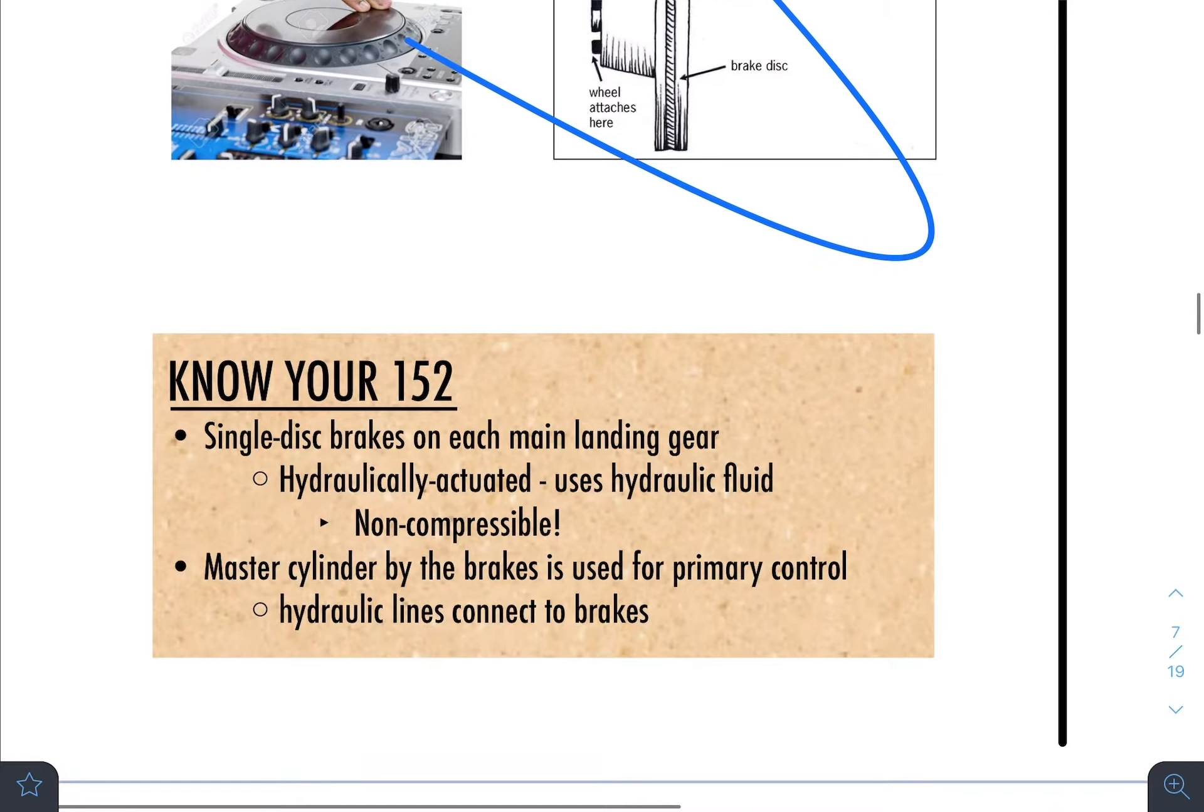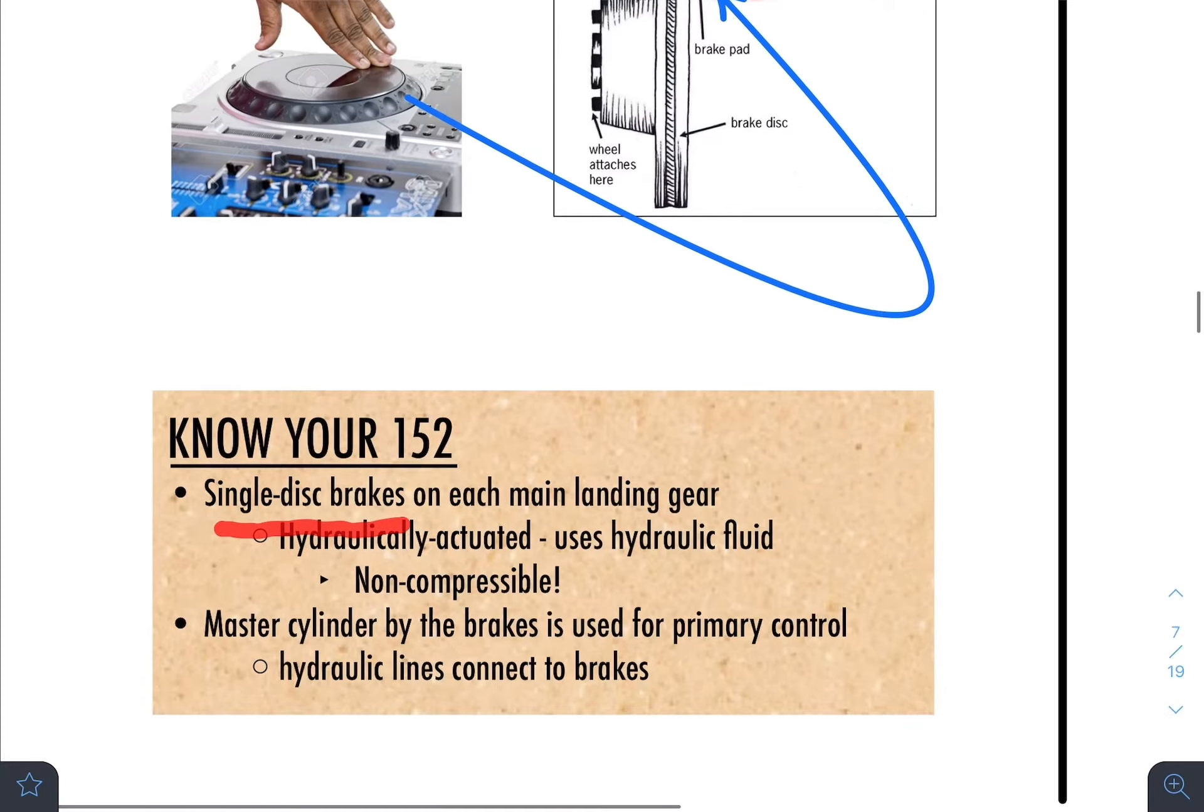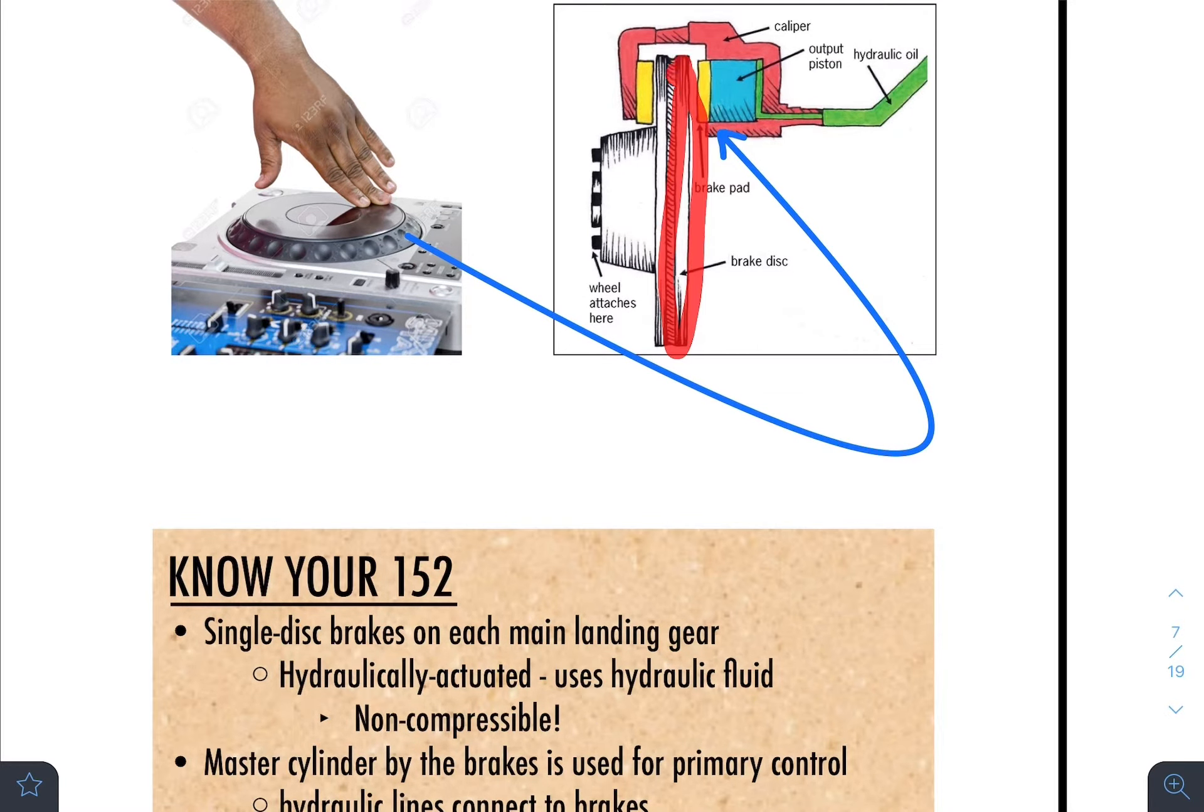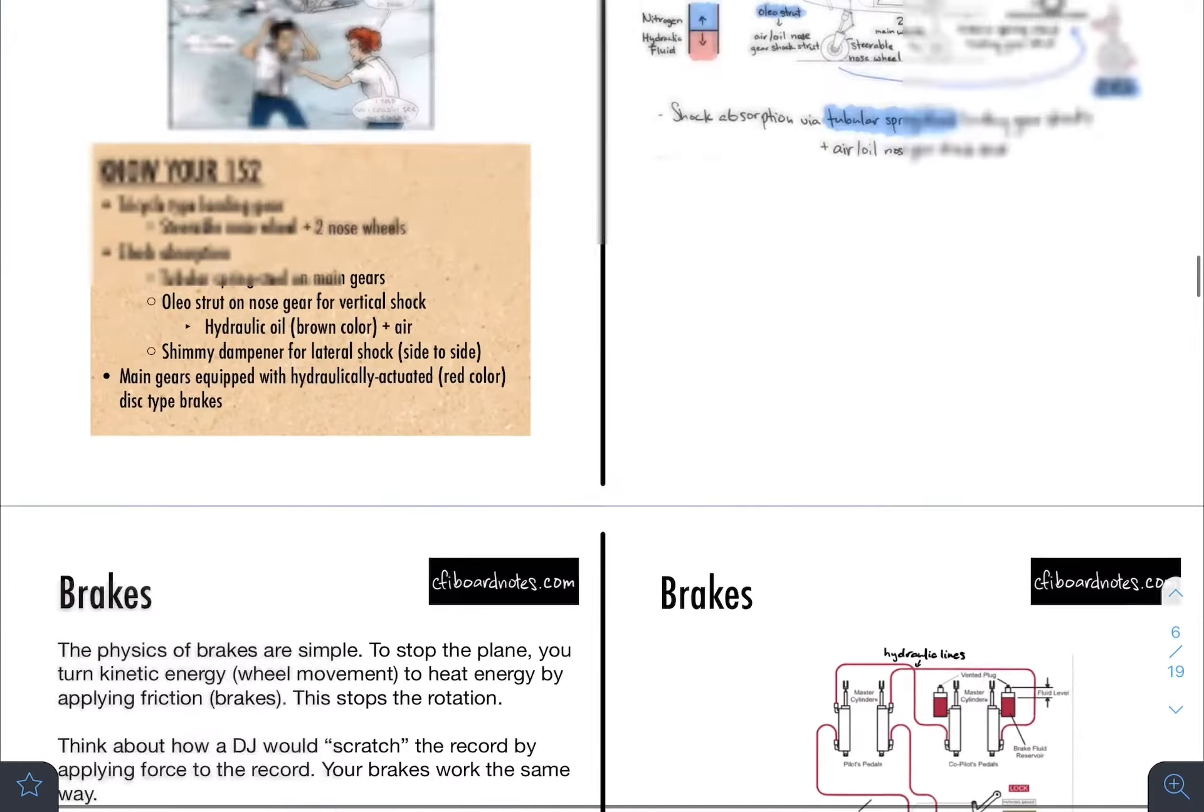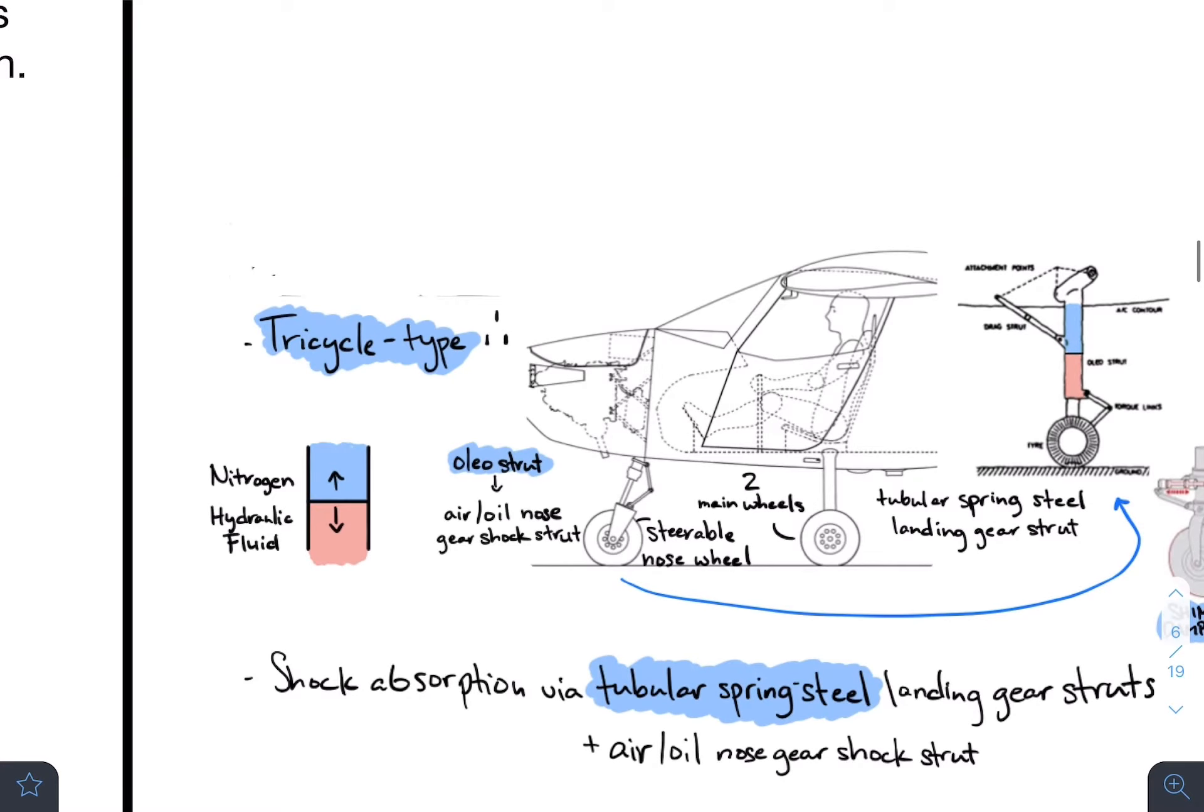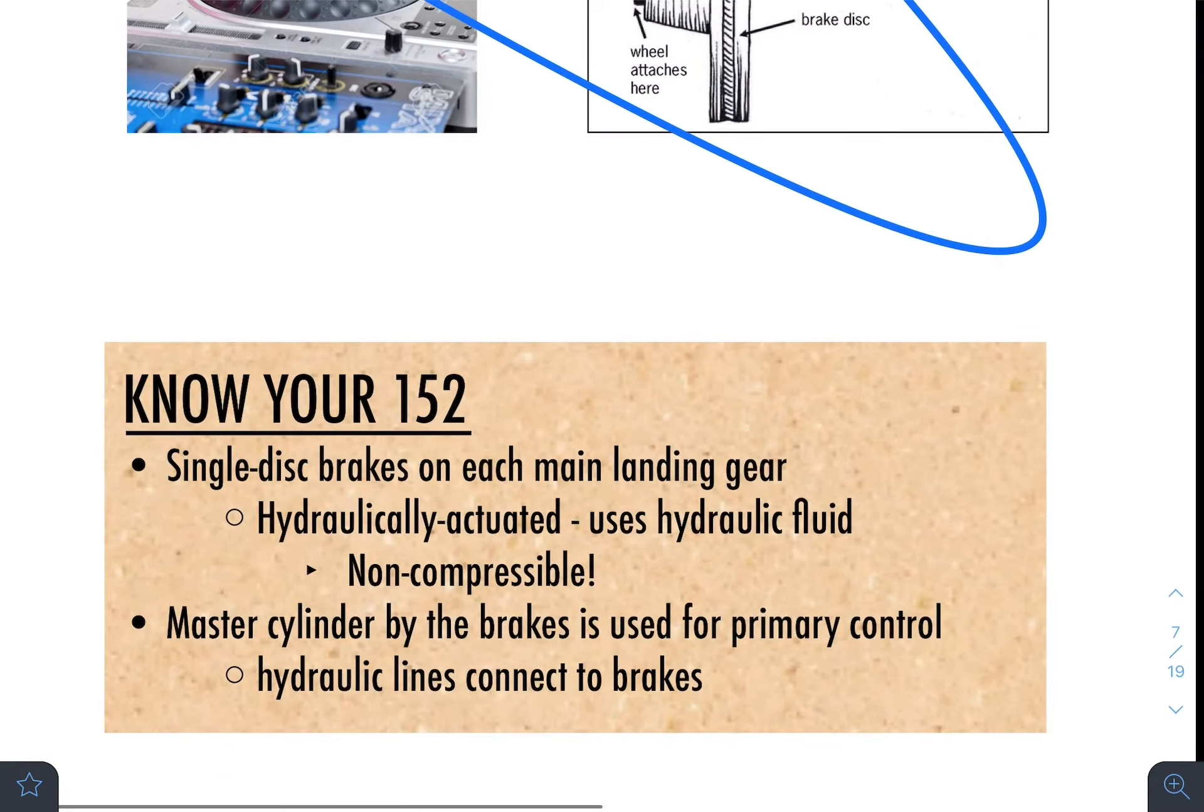So let's go ahead and move on to the Know Your 152 section. Now, these are the things you can find in the POH, and when it comes to checkride, these are the things that you're definitely going to have to know. Starting off with single disc brakes. Single disc brake means there is only one brake disc on each of the main landing gears. There are two landing gears, and it would each have a single disc brake.